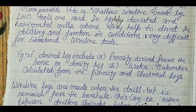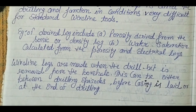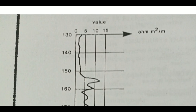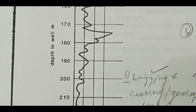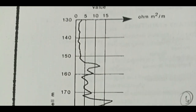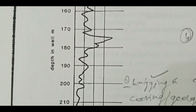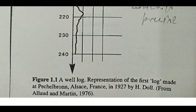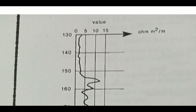Log-derived information includes porosity derived from sonic or density logs, and water saturation calculated from porosity and electrical logs. Wire line logs are made when the drill bit is removed from the borehole — either between drilling episodes, before casing is set, or at the end of drilling. Here you can see an example of a resistivity log showing how resistivity changes with depth — at some points it is low and at others it is high, for reasons we will discuss in detail later.